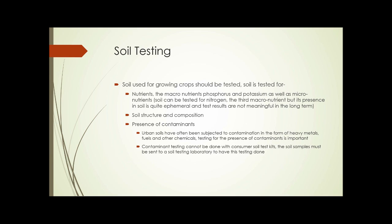Speaking of soil testing: soil used for growing crops should be tested for nutrients — the macronutrients phosphorus and potassium — as well as micronutrients. Soil can be tested for nitrogen, the third macronutrient, but its presence in soil is quite ephemeral and test results aren't meaningful in the long term. Nitrogen is usually not measured long-term; the results apply for the first crop you plant and not beyond that.